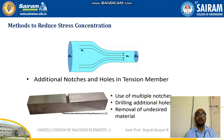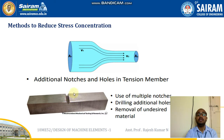Methods to reduce stress concentration include creating additional notches near regions of cross-section change, so that smaller notches redistribute the stress. For holes, drilling multiple smaller holes nearby helps distribute the stress. Other methods include the use of multiple notches, drilling additional holes, and removal of undesired material. With this, the video is complete. Thank you.